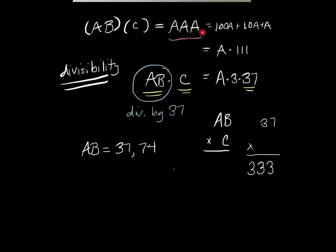AB times C equals AAA, which is 333. That was the hypothesis of the problem. Well, if AB is 37, then AAA is 333. So then, what is C? That's just a matter of dividing 37 into 333. And anybody can do that. It's 9. So that means C is 9.